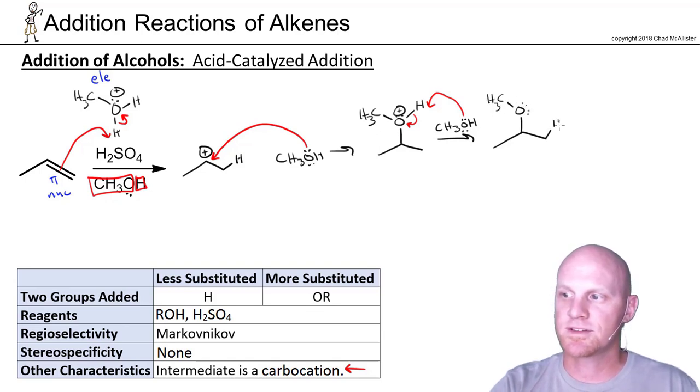So again, we added an H to the less-substituted side. We added the OCH3 to the more-substituted side. And in this case, we did not form a single chiral center. So we're just going to get a single achiral product.